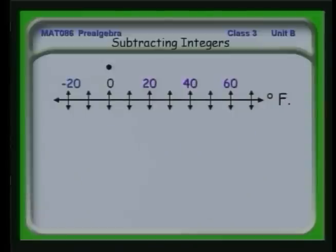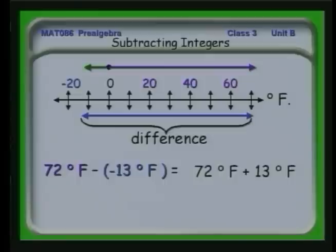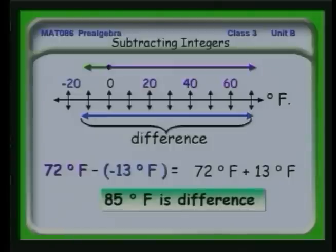We need 72 degrees minus a minus 13 degrees. We see a minus and a minus, so we go to 72 degrees plus 13. Adding those together, the difference is 85 degrees. It's larger because we're looking for the difference between a positive number and a negative number. If you have a positive minus a minus, you need to change those two to an addition. This is a very important observation you'll encounter a lot as you do more and more with algebra.